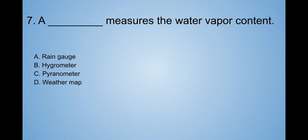Seven. A blank measures the water vapor content. A. Rain gauge. B. Hygrometer. C. Pyranometer. D. Weather map. Okay, this time, you give an answer. Okay, ready?